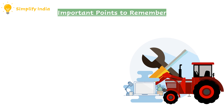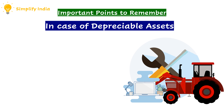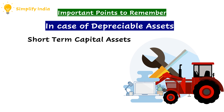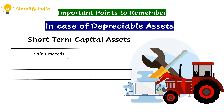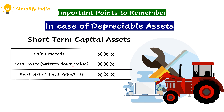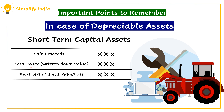In case of depreciable assets like plant and machinery, it will always be a short-term capital asset. For this, we have to use the particular format for computation of short-term capital gain or loss, where we take the sales proceeds from which we deduct the written down value, arriving at short-term capital gain or loss.